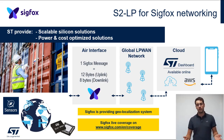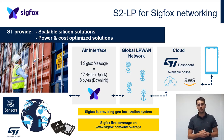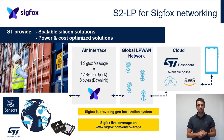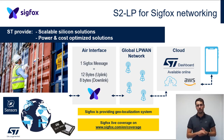Sigfox is also providing a geolocation feature. Using triangulation systems, it permits to track and detect the localization of your device. The Sigfox geolocation accuracy is under 1 km in town and under 10 km in rural zones. Of course, everything depends on the Sigfox coverage.